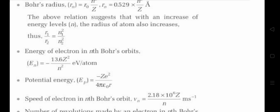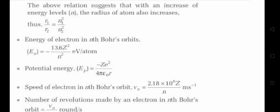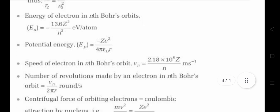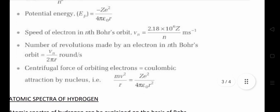The energy is given in units of electron volts per atom, and can also be expressed in Joules per mole — the conversion will be given in the next session. Potential energy: E-p equals minus z-squared-e-squared divided by 4-pi-epsilon-naught-r. The speed of the electron in the nth Bohr orbital is: v equals 2.18 times 10 to the power 6 times z divided by n, in meters per second. Additionally, the centrifugal force of the orbiting electron equals the Coulombic attraction of the nucleus: m-v-squared divided by r equals z-e-squared divided by 4-pi-epsilon-naught-r-squared.